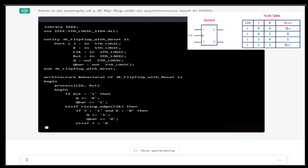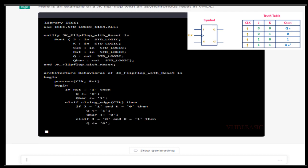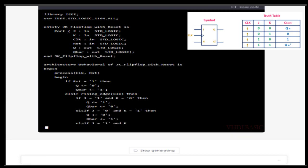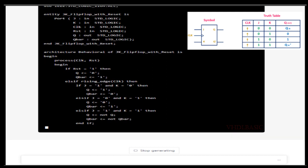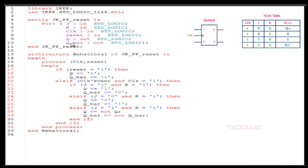If J equals 0 and K equals 1, then Q will be assigned 0. If J equals 1 and K equals 0, then Q will be assigned 1. If both J and K are 1, then we need to toggle the previous Q value and that toggled value will be assigned to Q. This is the truth table of the JK flip-flop.